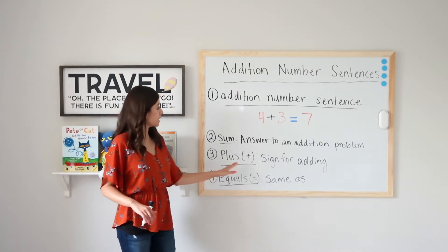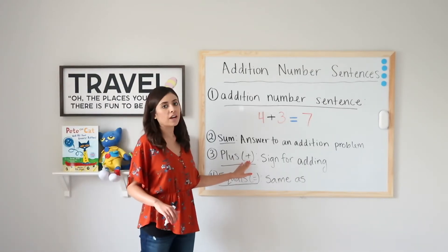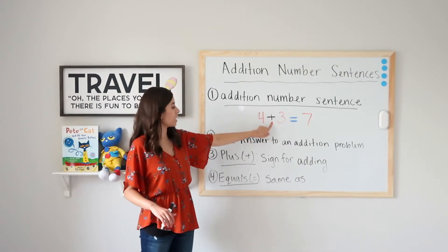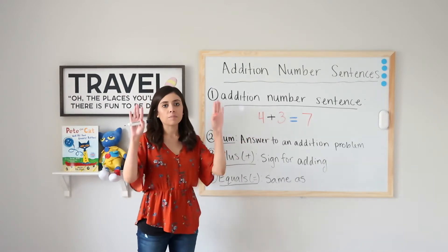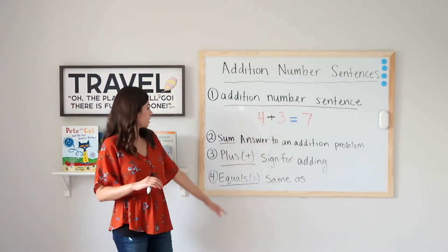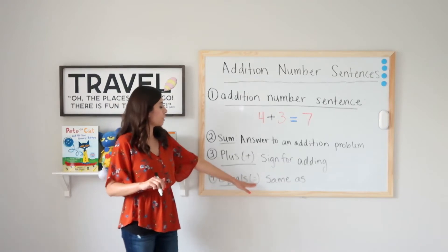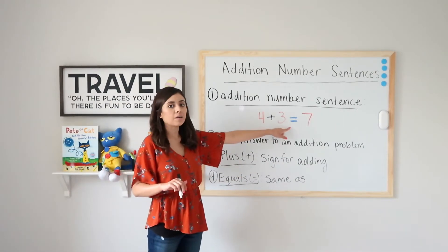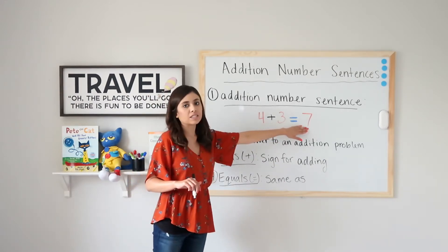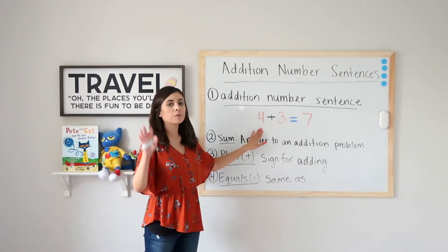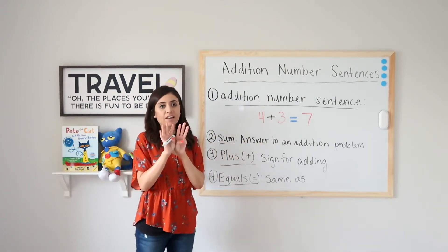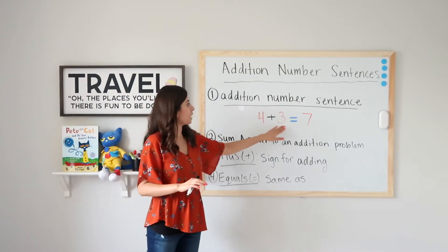Plus is the sign we use for adding. When I see this sign, I know that I have to take my part and part and put them together to make the whole. Equals means that this has the same value as this. If I have four gummy bears in one hand and three in the other, I can put them together and that's seven — the same amount as seven.